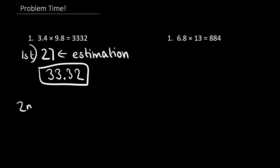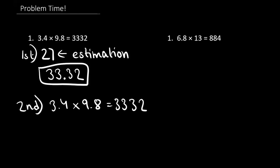Now let's do the second method. 3.4 times 9.8 equals 33.332. Let's see where the decimal points are — right here and here. There are two digits after the decimal point total. That means there should be two digits after the decimal point in our answer: 1, 2. So our answer is 33.32.